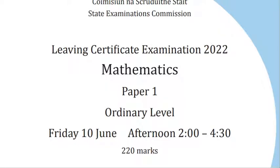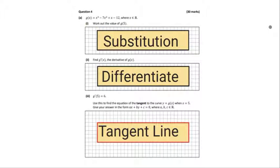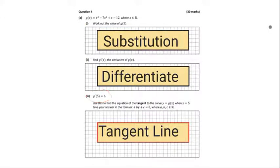A very warm welcome back to MathsPlus. Today we're continuing the 2022 leaving cert higher level paper 1. Let's have a quick look at question 4. First we need to do a substitution and put 5 into the cubic function g of x. In part 2 we need to differentiate the function, and the third part is the tangent line — we need to get the slope of the tangent, and we're given that g dash of 5 is equal to 6. So let's get started.